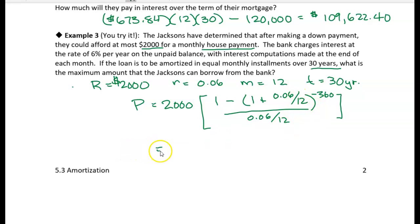So we put that in our calculator. And what do we find out? $333,583.23 is what I get. So that's how much they can afford.